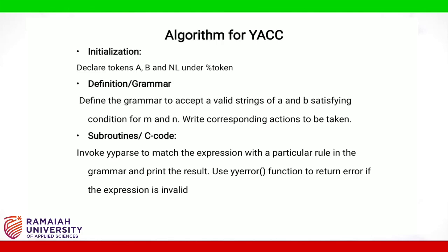Algorithm for Yacc: In initialization, declare tokens A, B, and NL under %token. In the definition section, i.e. grammar, define the grammar to accept a valid string of A and B satisfying the condition for M and N, and write corresponding actions to be taken. In subroutines (C code), invoke yyparse to match the expression with a particular rule in the grammar and print the result. Use yyerror function to return error if the expression is invalid.